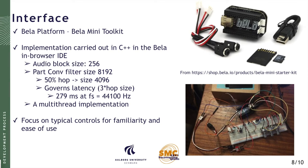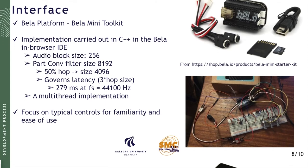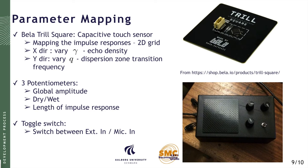The interface is wired on a standard breadboard and embedded in an ABS box. For parameter mapping, we used the Bela Trill square — essentially a touchpad — to map the different impulse responses. The horizontal direction is mapped to the gamma parameter, which changes echo density, while the vertical direction is mapped to the q parameter, which changes the dispersion zone transition frequency. We added three potentiometers to control the global volume, the dry-wet mixture of the output signal, and the length of the impulse response used in the convolution, which controls the reverb length. A microphone is embedded in the side of the box with a toggle switch to select between external input or microphone input.